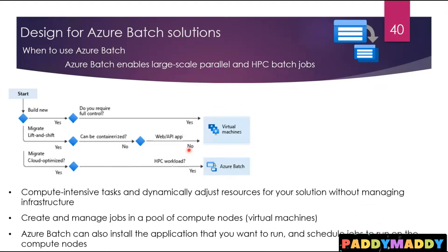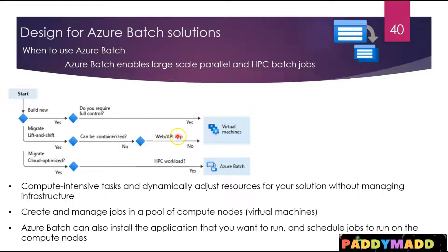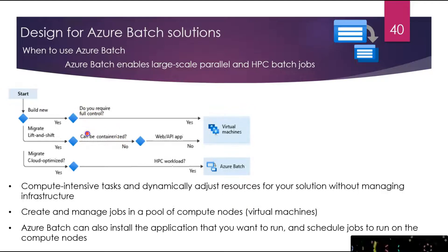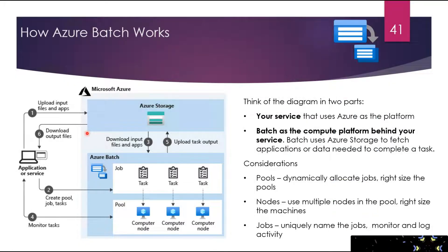When you're ready to run a job, Batch performs several things in the backend. It starts a pool of compute VMs, installs the applications, stages your required data, and runs the jobs with as many tasks as needed. You can identify which tasks are failing, re-queue those work items, and scale down the pool as the work completes.